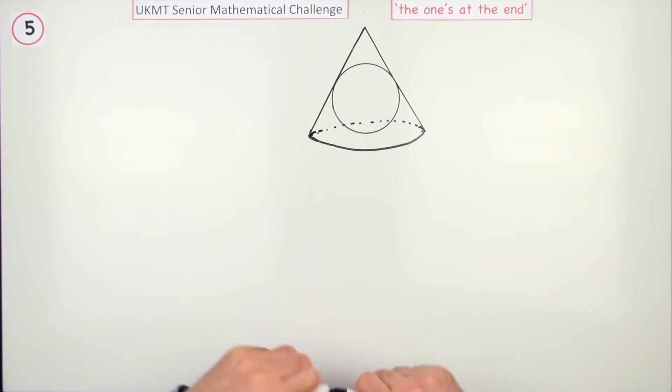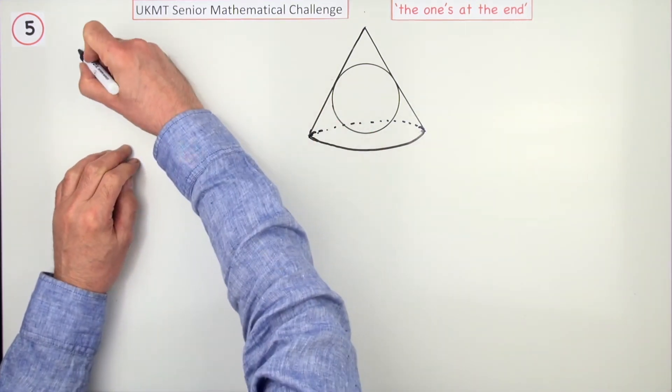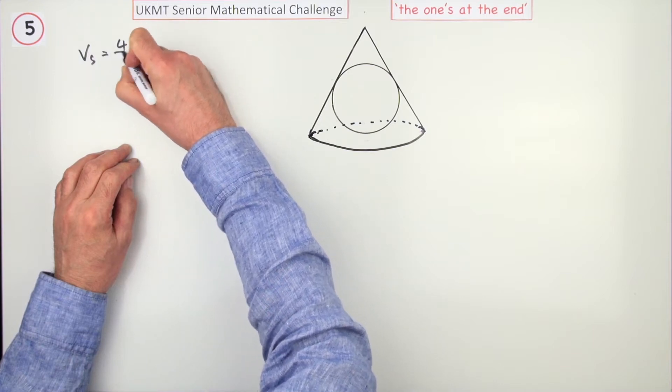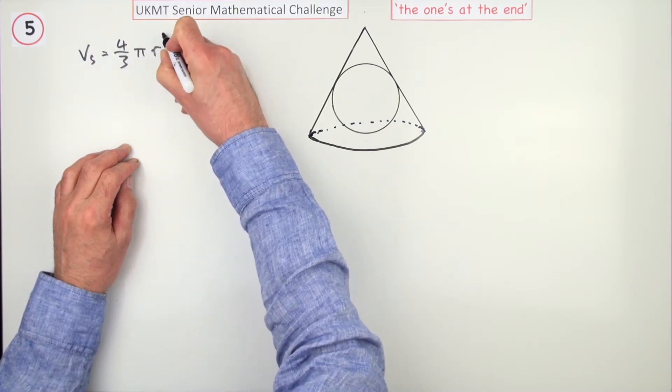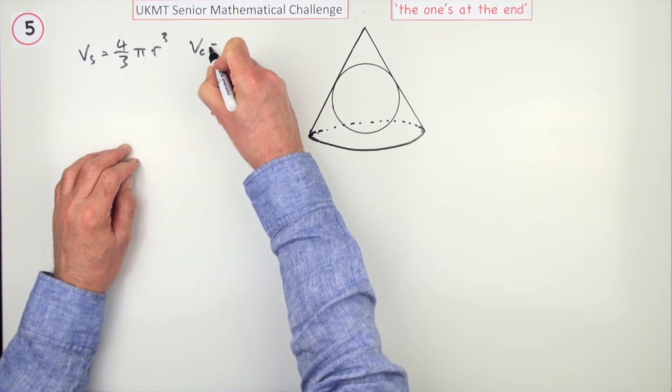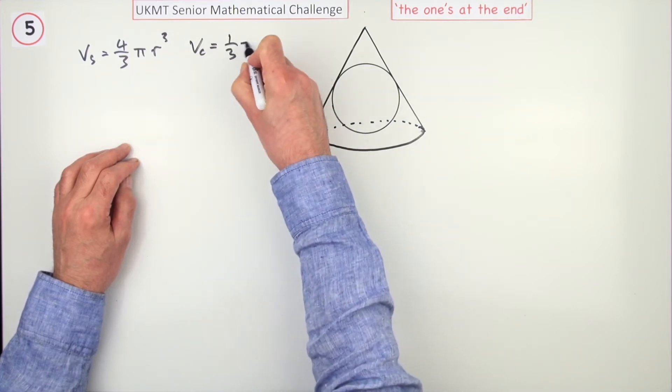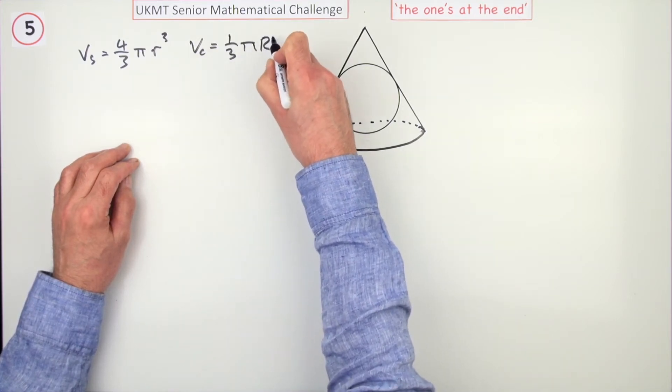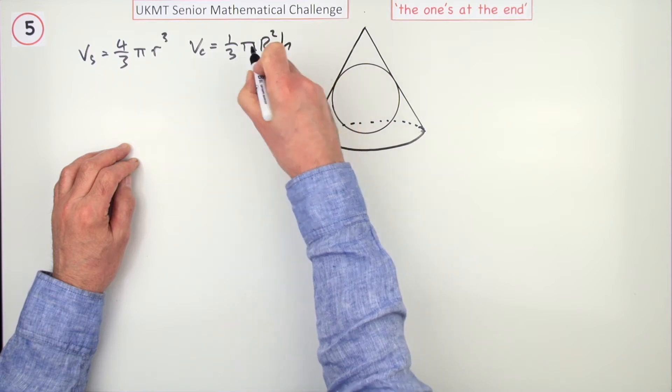The ratio of the volume. Well, the volume of the sphere would be 4 upon 3 π r³, and the volume of the cone would be 1/3 of π, now it's a different radius, I'll use R² times its height.